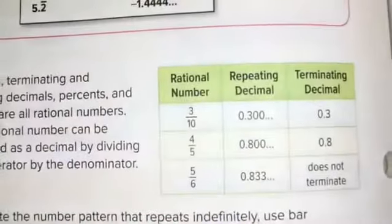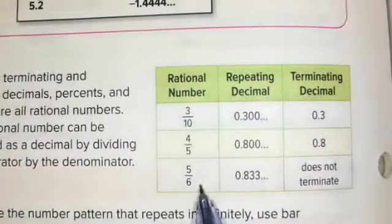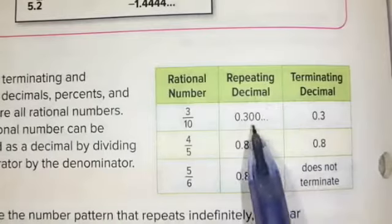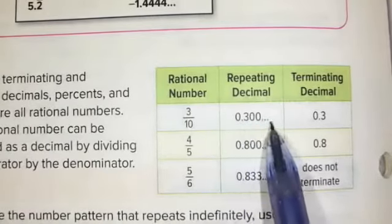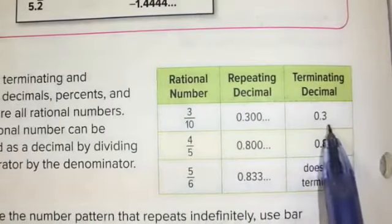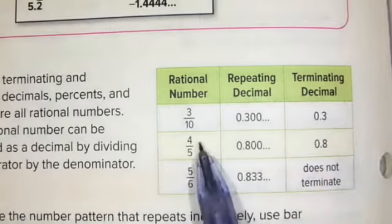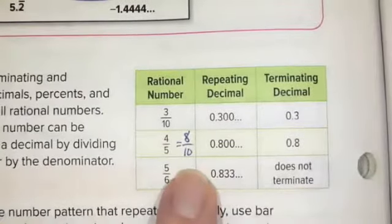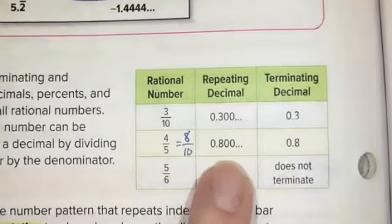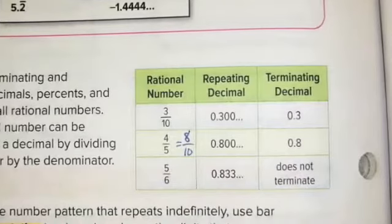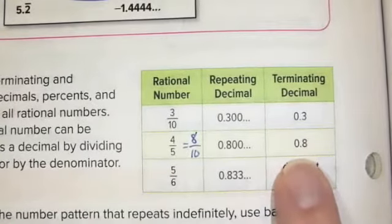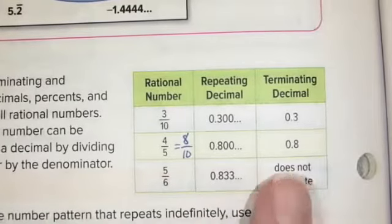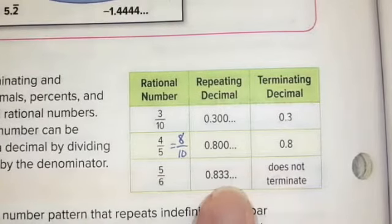Looking back at the table, we have examples of rational numbers and how they can be written with a repeating or terminating decimal. Three-tenths can be written as a repeating decimal of 0.3000 with zero repeating, or as a terminating decimal 0.3. Four-fifths, written as a base-10 fraction, is eight-tenths. As a repeating decimal that's 0.800 with zero repeating; as a terminating decimal it's 0.8. Five-sixths: five divided by six gives 0.83 with the three repeating — it does not terminate, so we can't write it as a terminating decimal.